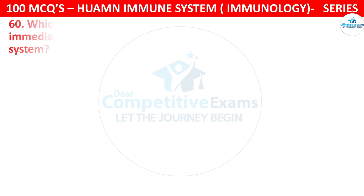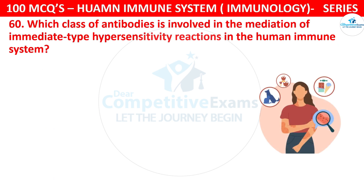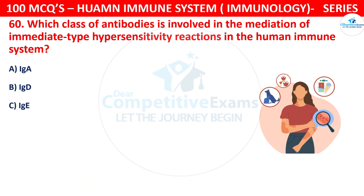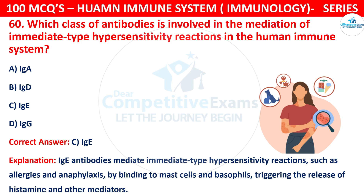Question number 60. Which class of antibodies is involved in the mediation of immediate-type hypersensitivity reactions in the human immune system? The options are IgA, IgD, IgE, or IgG. The correct answer is C, that is IgE. IgE antibodies mediate immediate-type hypersensitivity reactions such as allergies and anaphylaxis by binding to mast cells and basophils, triggering the release of histamine and other mediators.